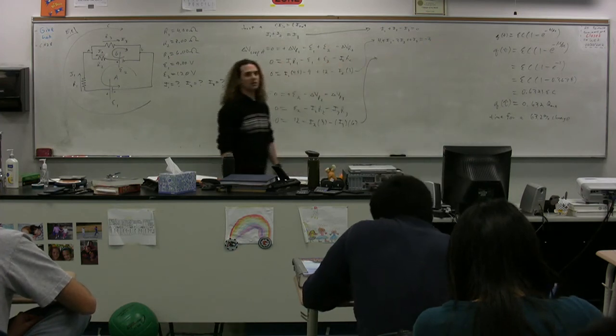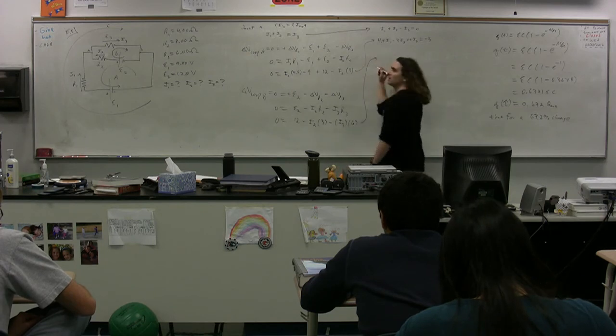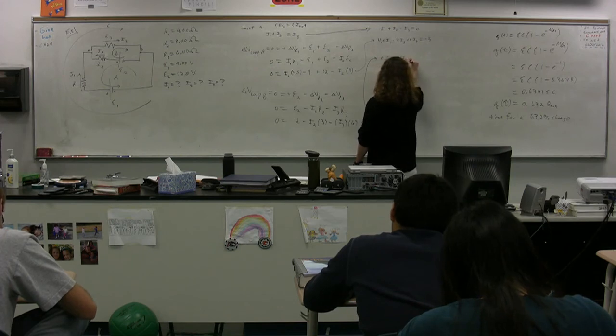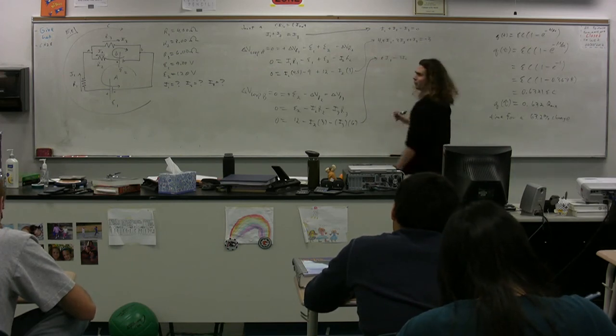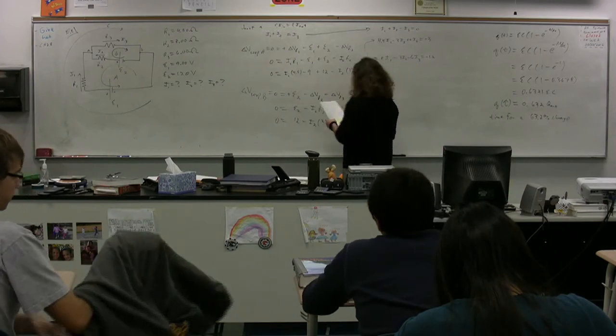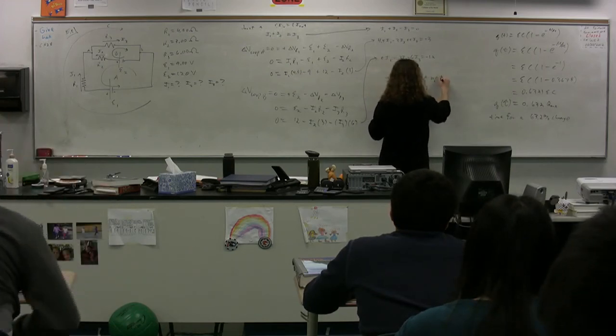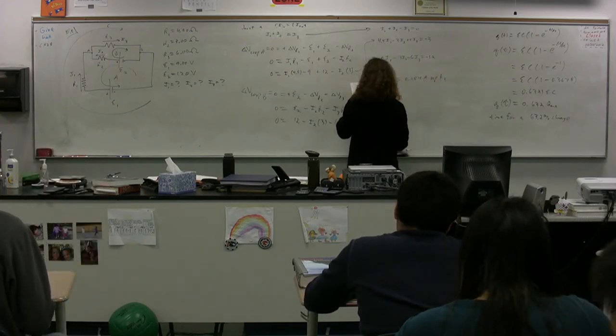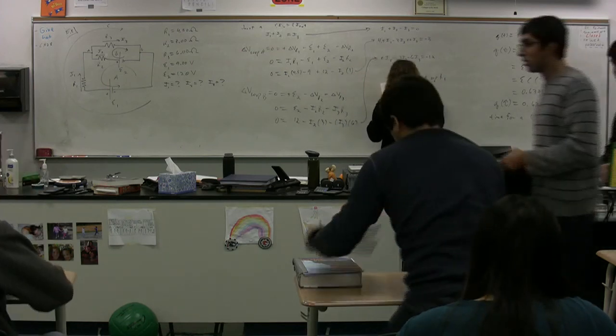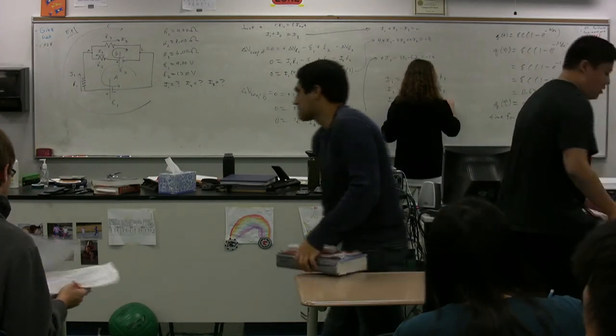The last one here. So is there an i1? No, there isn't. 0 i1. Minus 3 i2. Minus 6 i3. Equals negative 12. Does it work out to be negative 12? Yes, the 12 is on the other side. Minus 6 i2 equals 1.23 amps left to R2. And current 3 equals 1.28 amps to the right to R3.